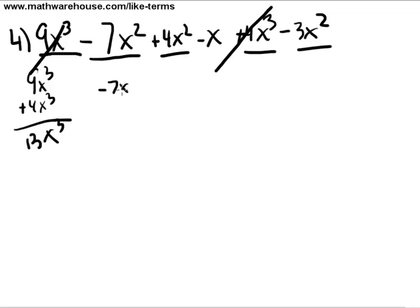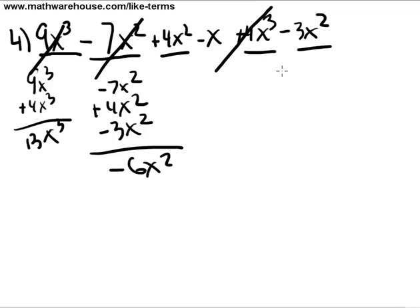So negative 7x squared plus 4x squared minus 3x squared is going to give us negative 10 plus 4 is going to give us negative 6x squared. So let's cross these off. Minus x has nothing to be combined with so it's just minus x. Minus x is all alone here.